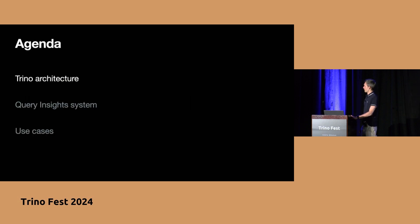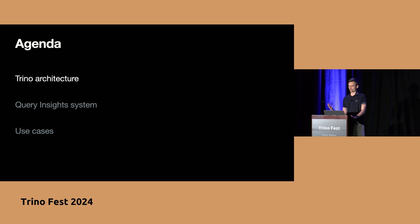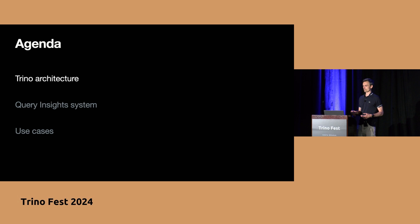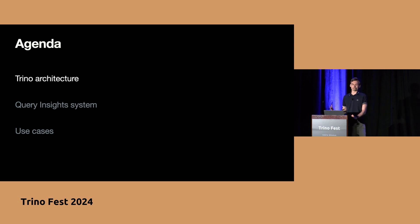The quick agenda is: first I'm going to show you a high-level overview of the Trino architecture that we have at Apple, mostly just to set the context. Then I'm going to present our query insight system — this is how we call it internally. And then I will show you some of the major use cases that we are using to leverage this dataset today.